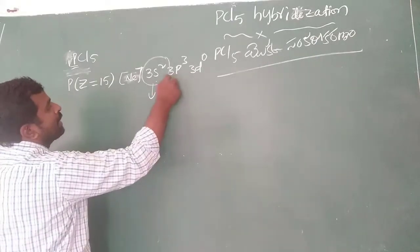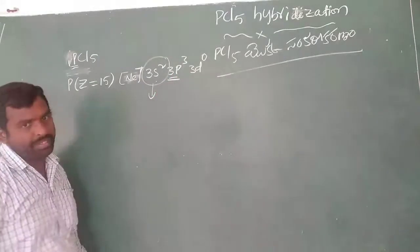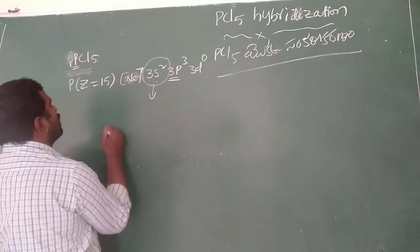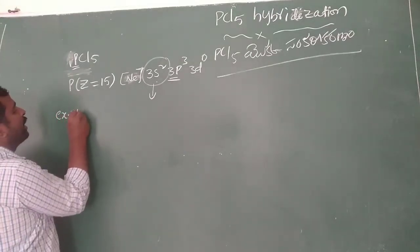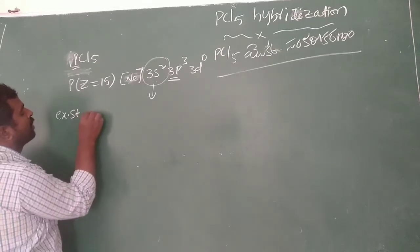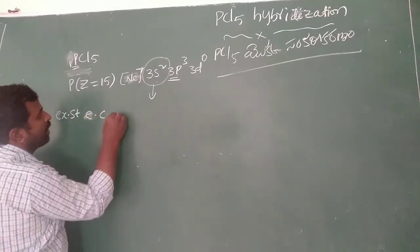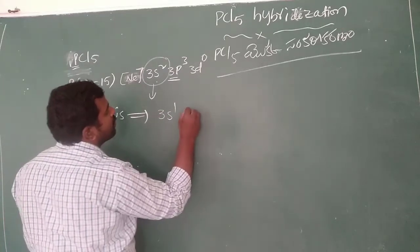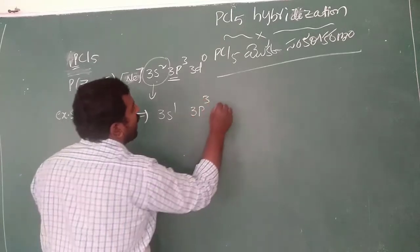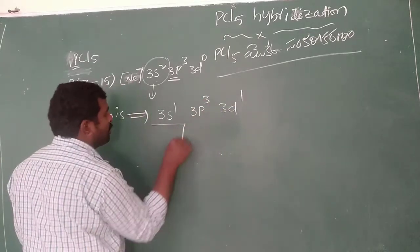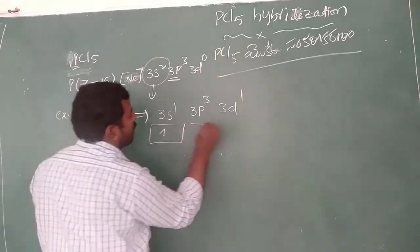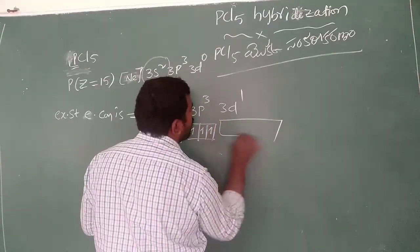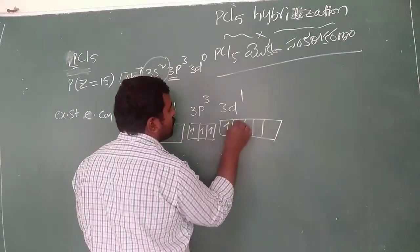That is why the empty 3d orbital — which was previously unoccupied — now receives one electron. At the excited state, the electron configuration becomes: 3s¹, 3p³, and 3d¹. So there are 5 orbitals available, with the remaining d orbitals still empty.